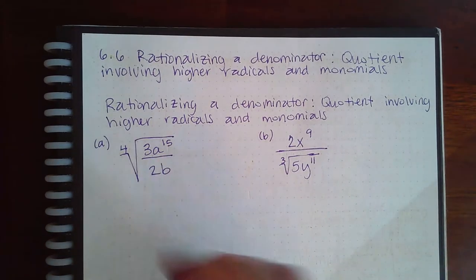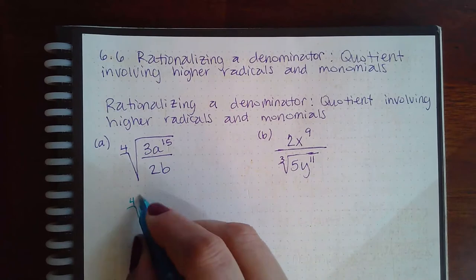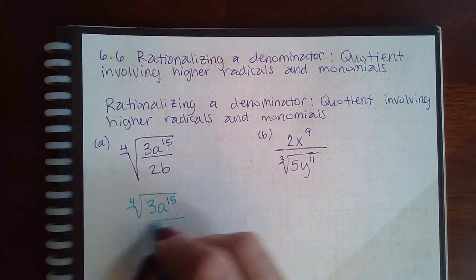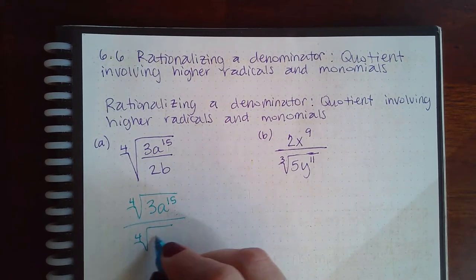So here we have to split the radical. We're going to do 4, and then 3a to the 15, and then 4 into b.